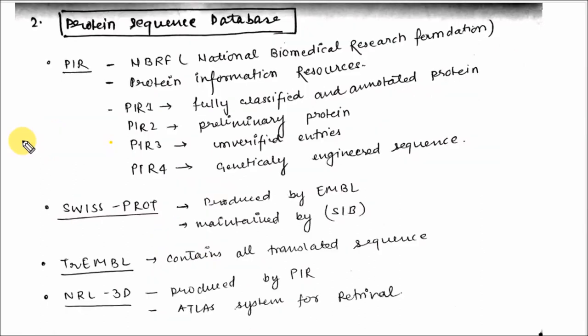Primary protein sequence databases include PIR (Protein Information Resource) present at NBRF (National Biomedical Research Foundation). In PIR, protein sequences can be classified in four parts: PIR1 means fully classified and annotated protein, PIR2 represents preliminary proteins, PIR3 represents unverified entries, and PIR4 represents genetically engineered sequences.